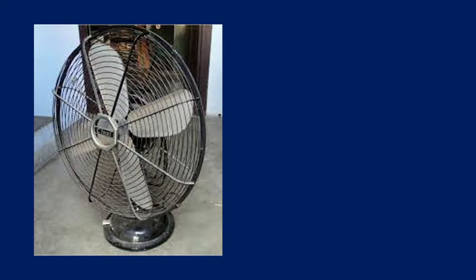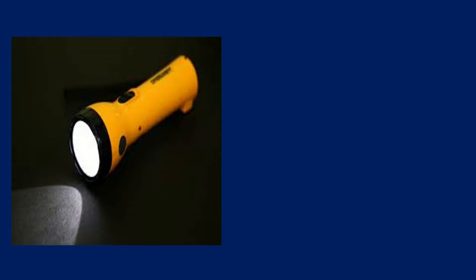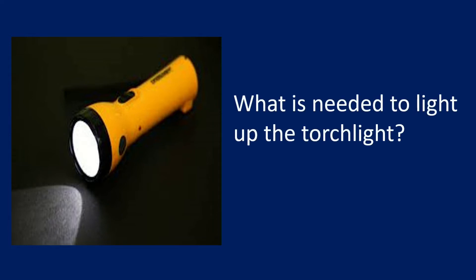It is a table fan. Something is needed to turn on the fan — what is that? The source for the movement of its wings is nothing but electricity, that is power. It is a torch light, and it is in the on position — it is giving us light. The source here is batteries. What is needed to light up the torch light? It is the power in the batteries. If they exhaust, we would not get light from the torch light.